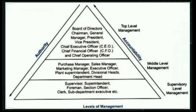At the same time, accountability flows upwards. Accountability means answerability — they need to report back. The supervisory level managers are accountable to the middle level management, and the middle level management is accountable to the top level management. Basically, every large organization has three levels of management: the top level, the middle level, and the supervisory level. That's all for today's class, dear students. Thank you.